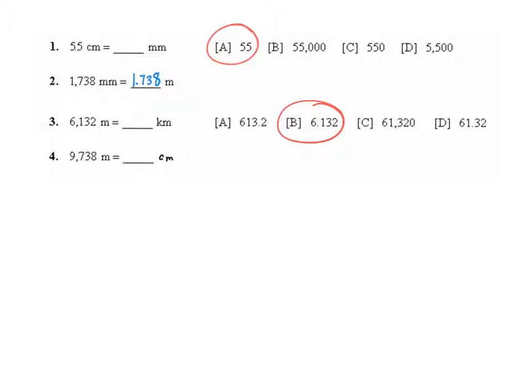And question 4 is 9,738 meters is how many centimeters? There are 100 centimeters inside of every meter. So I have more than 9,738 centimeters. In fact, I have 100 times that many.